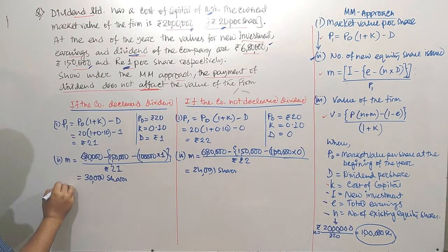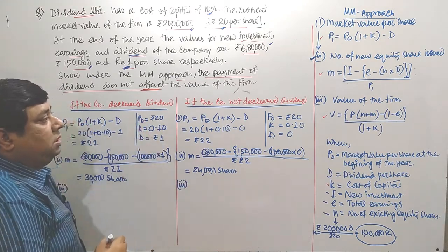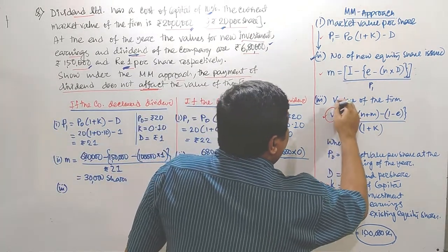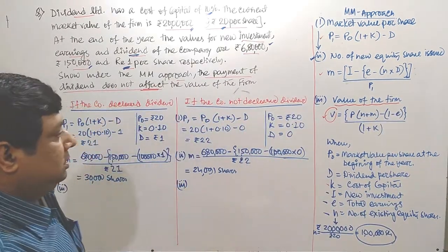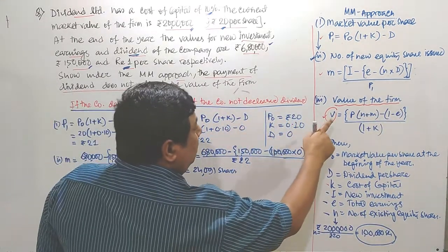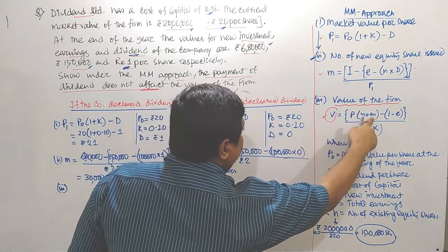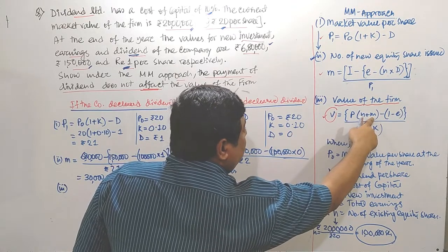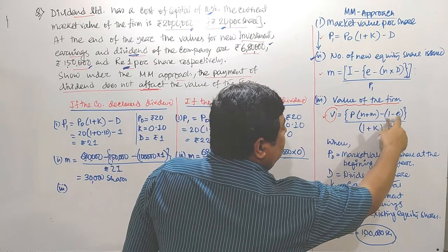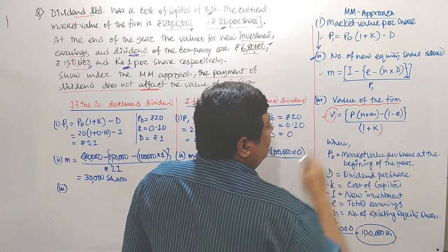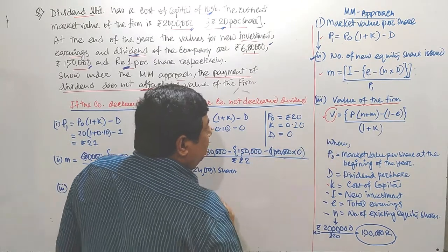In stage 3, we calculate the value of the firm in both cases. The formula is: V = P1 × (N + M) − I + E, divided by (1 + K), where P is the market value per share, N is existing shares, M is new shares issued, I is investment, E is earnings, and K is cost of capital.